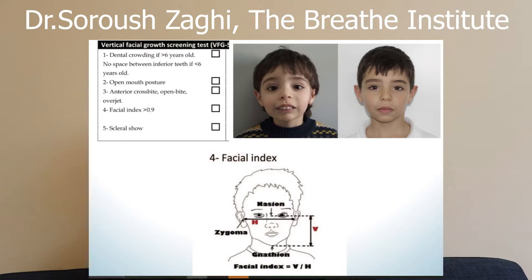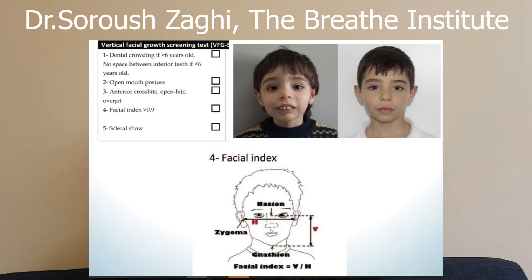The next sign is the facial index. Children with craniofacial abnormalities will grow to have longer faces — their jaws will point downward. You can measure from the middle of the eye to the chin, and from the lobe of one ear to the other, to get the ratio V over H. If it is above 0.9, that is a sign of craniofacial abnormalities.